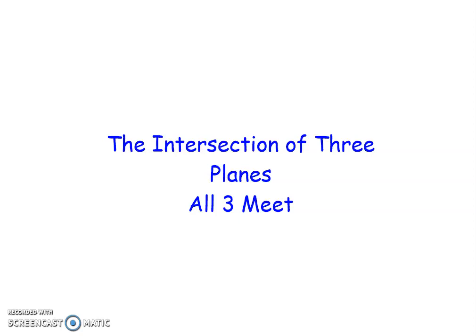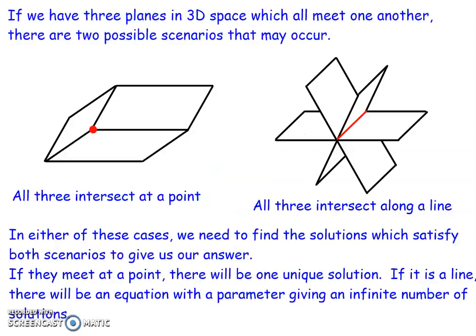What we're going to look at here is the intersection of three planes in three-dimensional space. In this scenario, we're going to consider the fact when all three of the planes meet each other. We're going to look at the possibilities of the different types of scenario and how we would solve these in order to calculate the required information for our question. Now if we have three planes in 3D space, there are only two scenarios where all three of them meet each other.